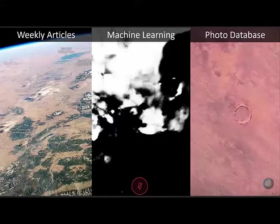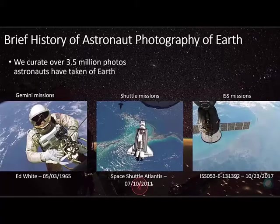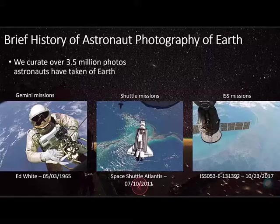Here is a very brief history on astronaut photography of Earth. Our group curates over 3.5 million photos that astronauts have taken of Earth, going back to the Mercury and Gemini missions, the Apollo missions, Skylab, shuttle, and anything from the 1960s to today on the International Space Station. We have that entire collection on our website. This is an immense dataset to sort, organize, and make easily accessible to the public.